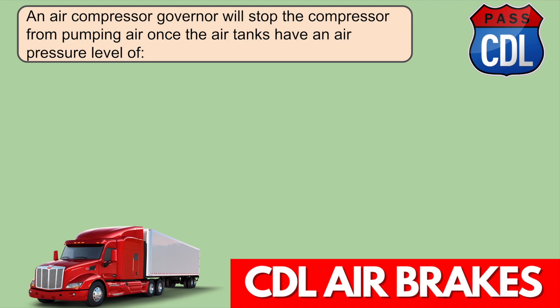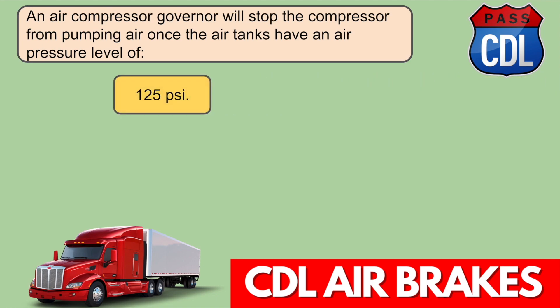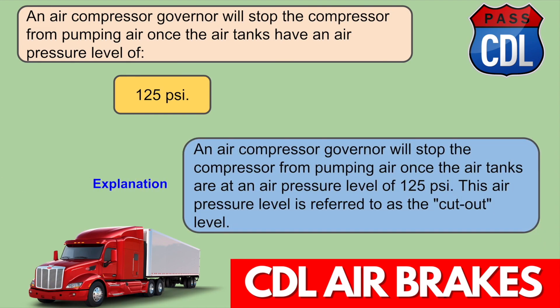An air compressor governor will stop the compressor from pumping air once the air tanks have an air pressure level of 125 PSI. This air pressure level is referred to as the cutout level.